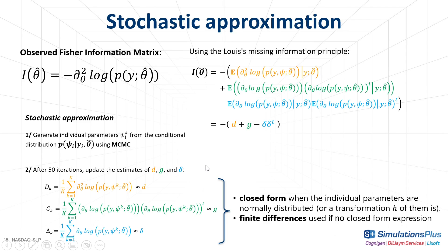Once we have at least 50 sets of individual parameters, we compute the variables d_k, j_k, and delta_k. You can recognize inside the sums similar terms to those inside the conditional expectations, composed of the first and second derivatives of the complete likelihood. These variables approximate the conditional expectations d, j, and delta with averages. They can be either calculated in closed form for parameters with variability, or with finite differences for parameters without variability for which there is no closed form expression.